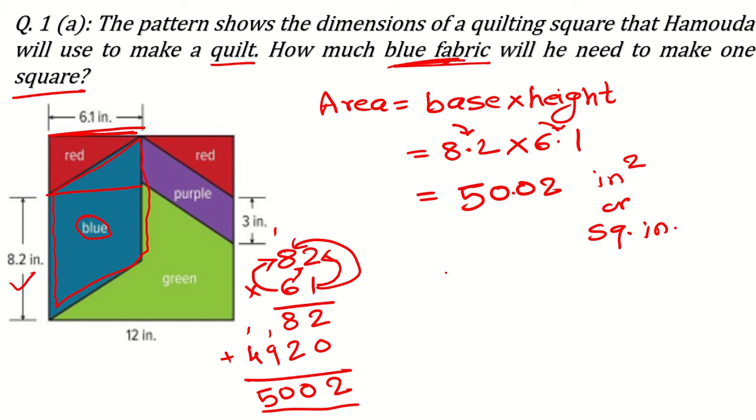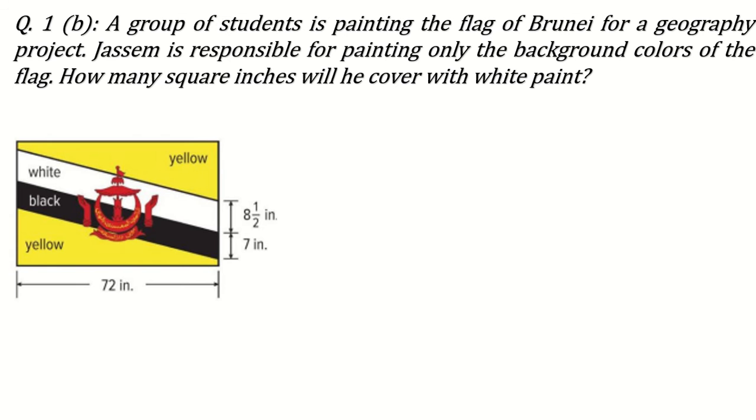Like this you can solve this question. Next question can be: A group of students is painting the flag of Brunei for a geography project. Jassem is responsible for painting only the background colors of the flag. How many square inches will he cover with white paint? Now you see here in this question we have to find only this white area. Again you think here that it is looking like a parallelogram, yes? Don't focus on the picture what I am drawing because this alignment is not good of my pen.